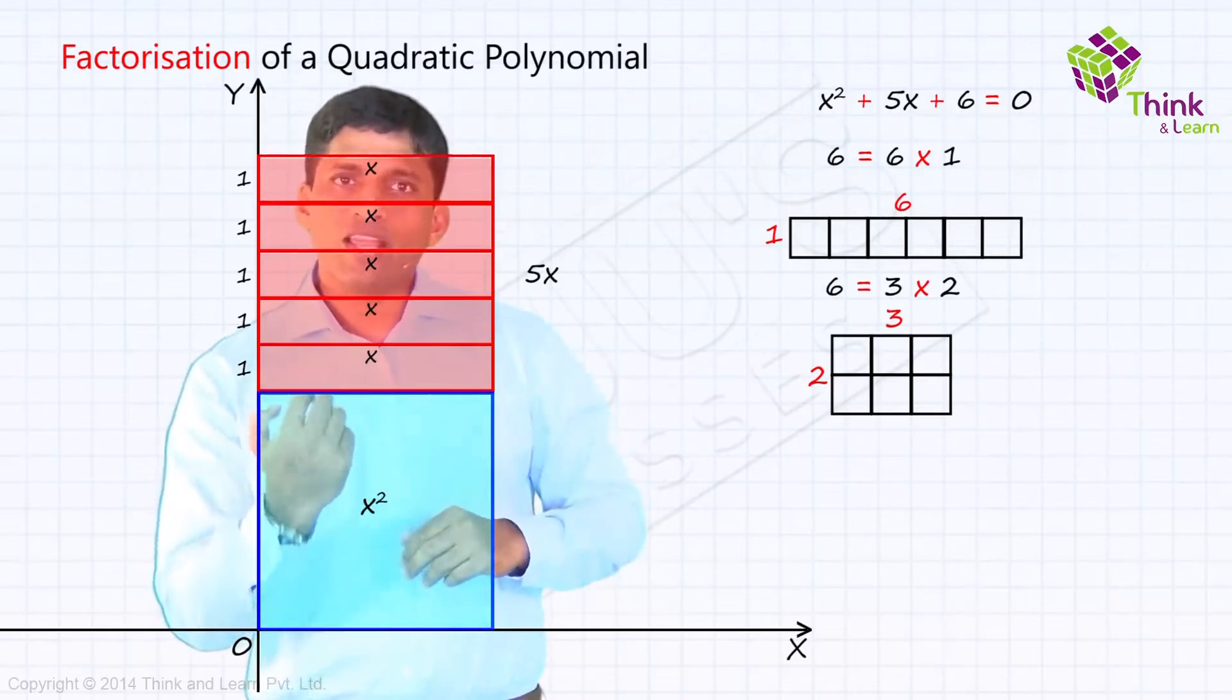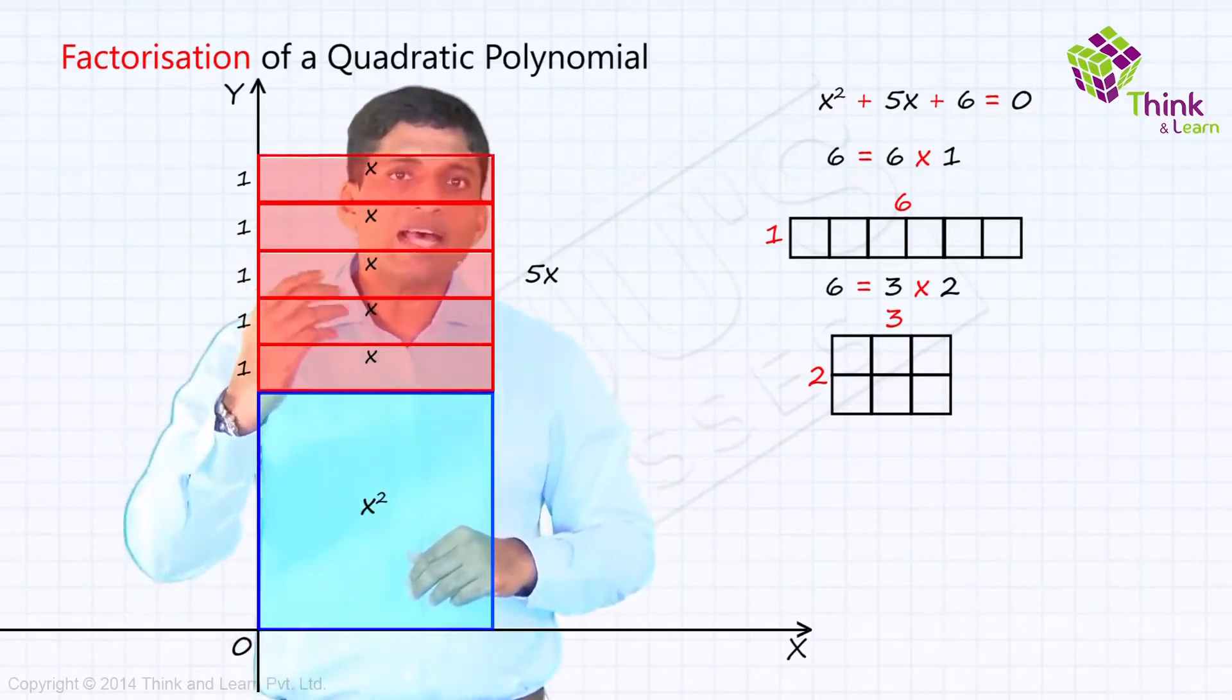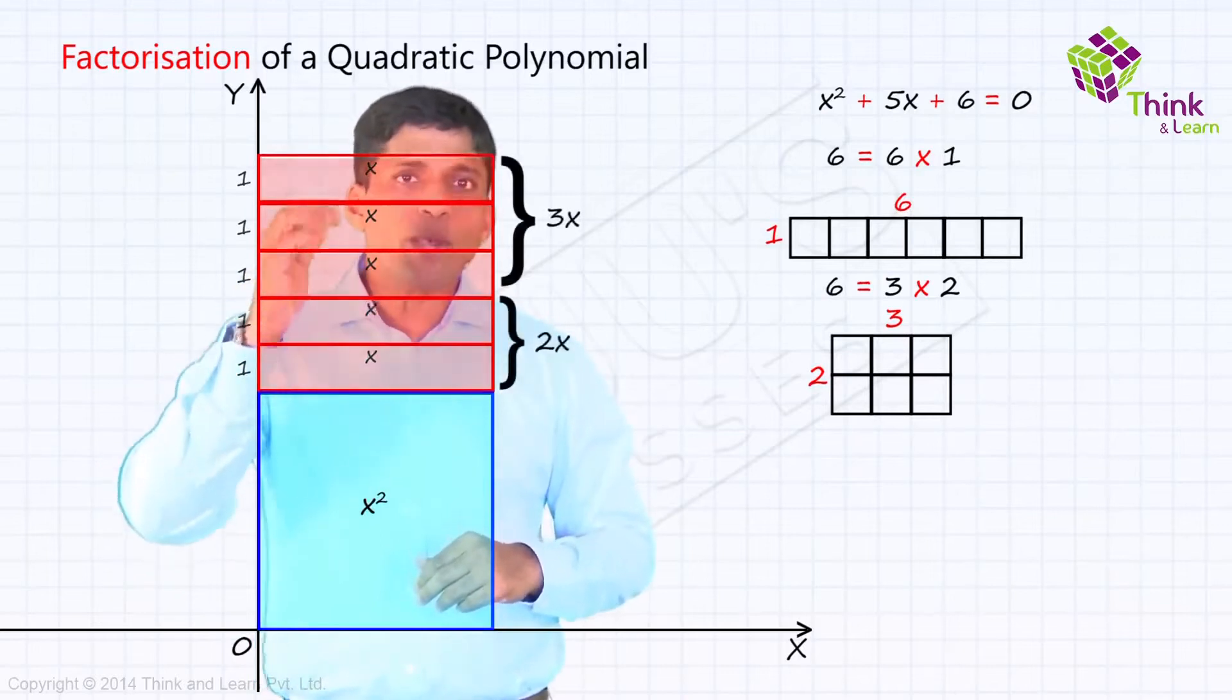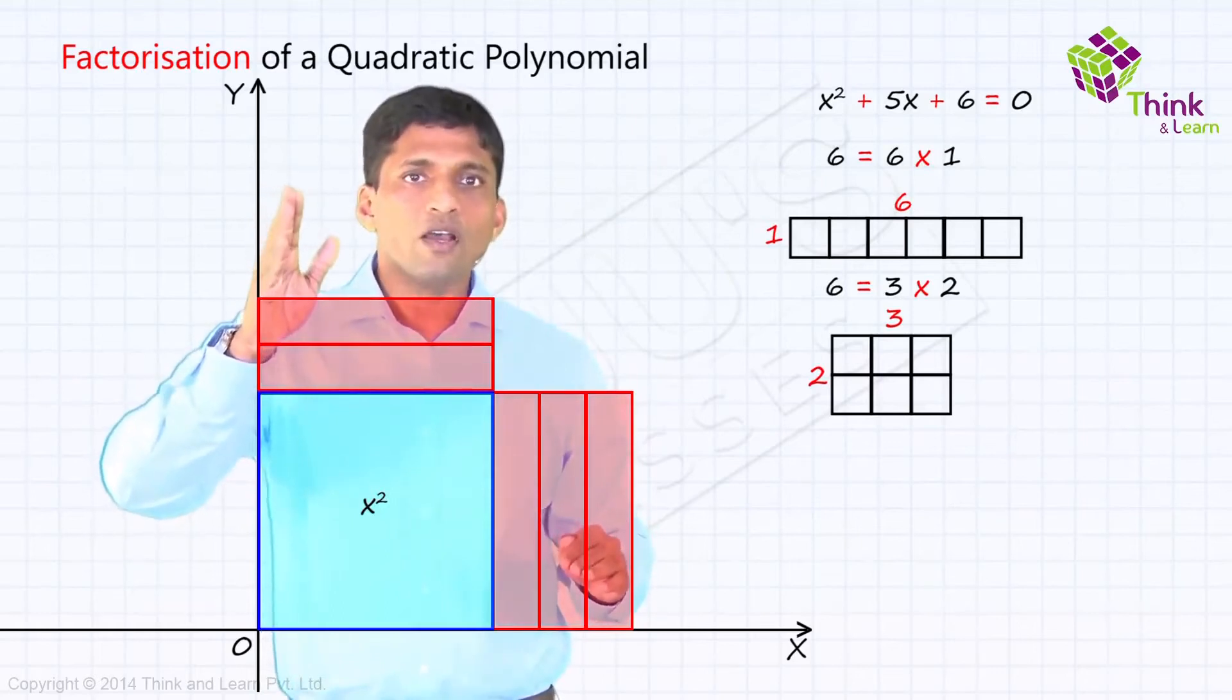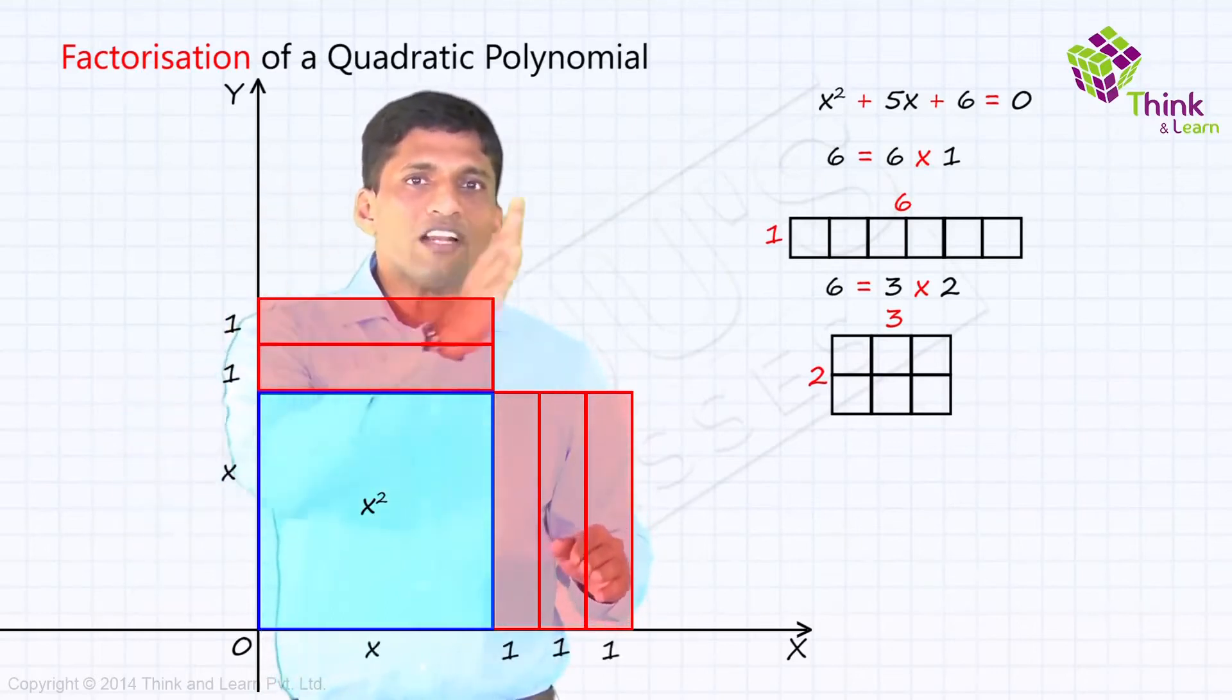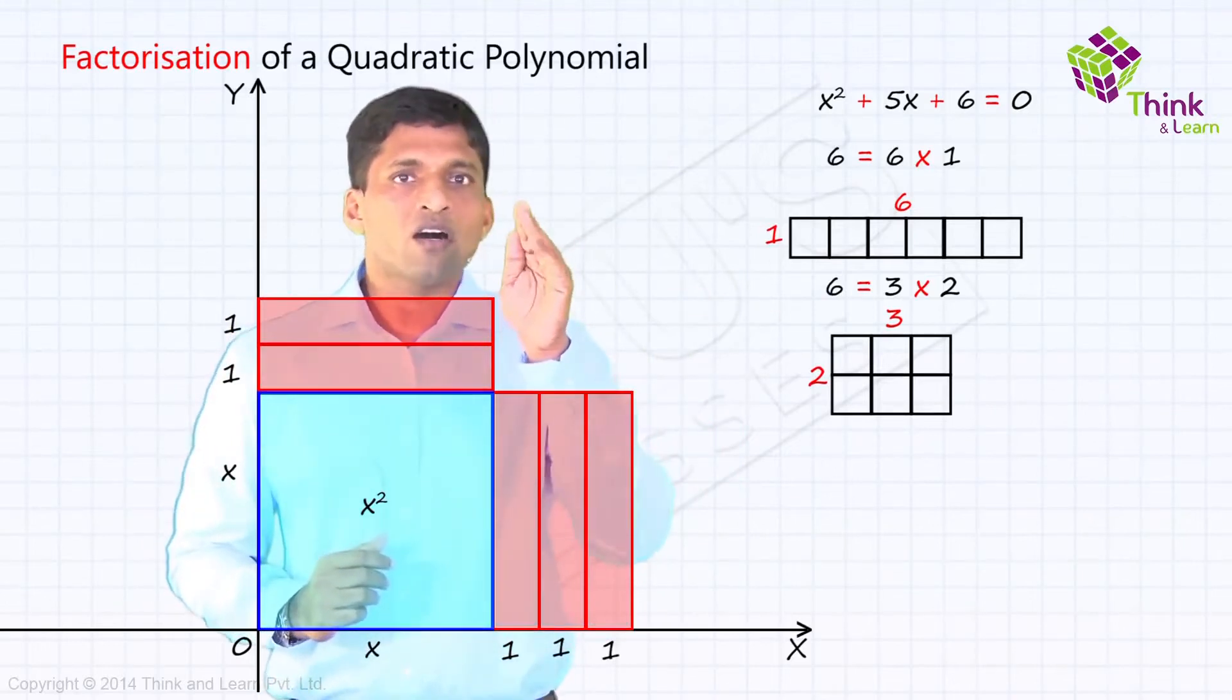So now coming back to this area x square plus 5x, this 5x you can split as 3x and 2x. So I will bring this 3x down here. 2x is left on top. Now, this rectangle will get completed when, what is the remaining region here?